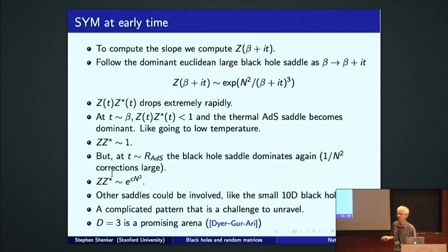What's D? D is the bulk space-time dimension. So it's a boundary one plus one-dimensional conformal field theory. Sorry, I should have been explicit.